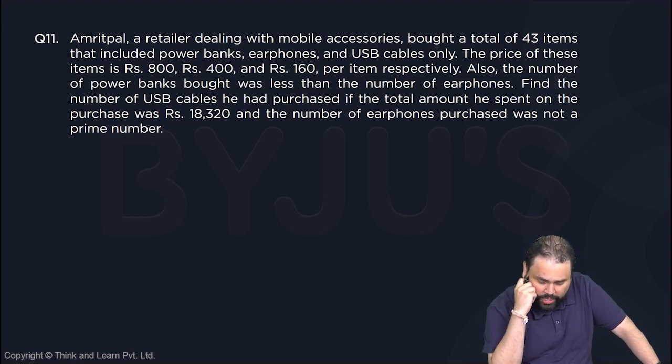Let's have a look at this question. Amrit Pal, a retailer dealing with mobile accessories, bought a total of 43 items that included power banks, earphones, and USB cables only. The price of these items is 800, 400, and 160 rupees per item. Also, the number of power banks bought was less than the number of earphones. Find the number of USB cables he had purchased if the total amount he spent on the purchase was 18,320 and the number of earphones purchased was not a prime number.